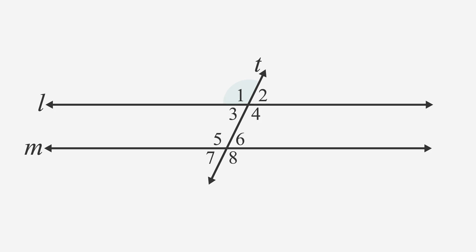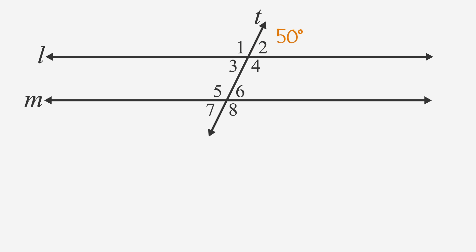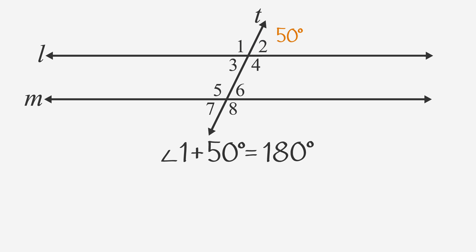Since we know that the measures of angle 1 and 2 must add up to 180 degrees, and we know that angle 2 is 50 degrees, then we can write a simple equation to find angle 1. Angle 1 plus 50 degrees equals 180 degrees. Subtracting 50 from both sides, we get angle 1 is equal to 130 degrees.